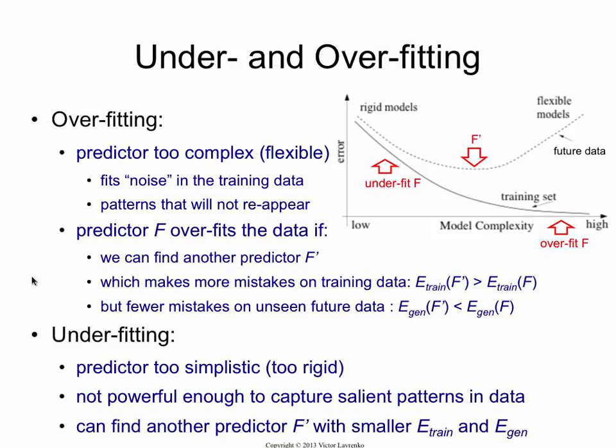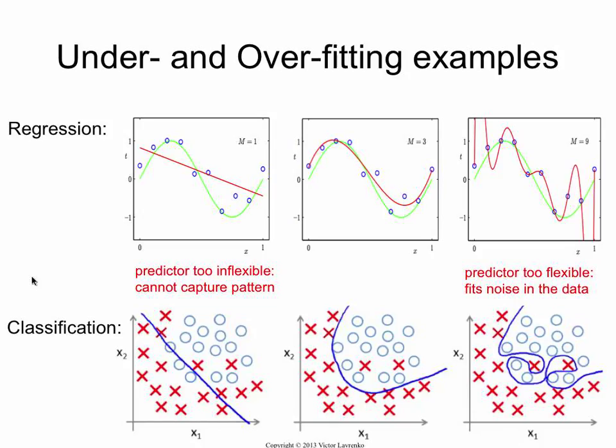Pictorially, this would be an example of an overfit f, and this would be an f prime. F has very low error on the training data and a relatively high error on future data. F prime has a higher training error — it's worse at training time — but it has a lower future error; it's better than f on the data that will come tomorrow. That is the definition of overfitting.